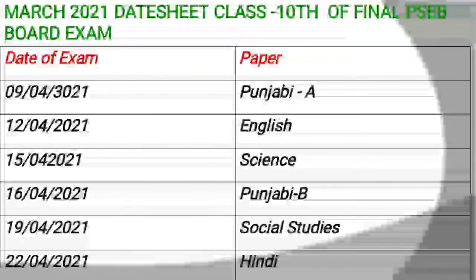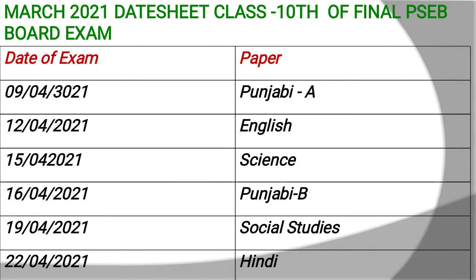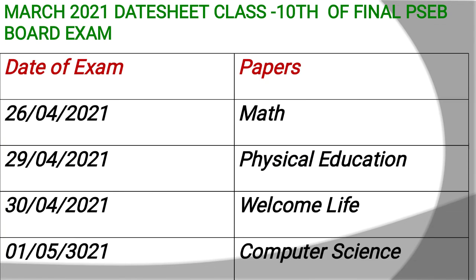Here we have the datesheet designed for 9-4-2021. The first paper is Punjabi A on the 12th, English on the 12th, Science on the 15th, Punjabi B on the 16th, Social Science on the 19th, Mathematics on the 12th, Physical Education on the 13th, then Welcome Life — a new subject added to this syllabus — on the 15th.